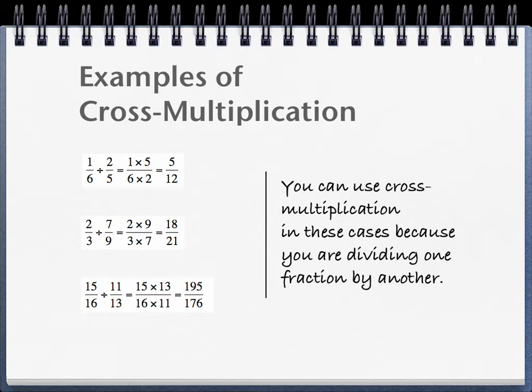So in the first example, you can cross-multiply 1 times 5, and for the denominator 6 times 2, and that'll get your answer. For the second one, you'll again cross-multiply 2 by 9 and 3 by 7 to get 18 21sts. And for the third one, 15 times 13 in the numerator and 16 times 11 in the denominator will get you your answer, which is 195, 176.